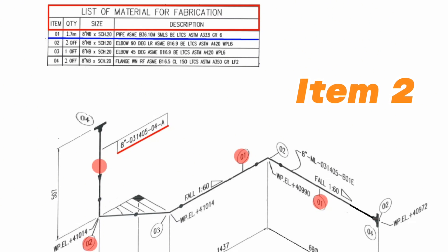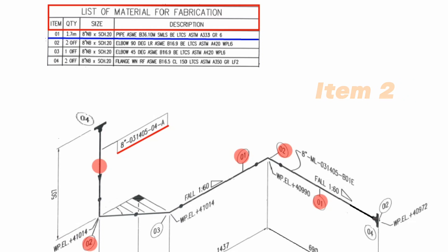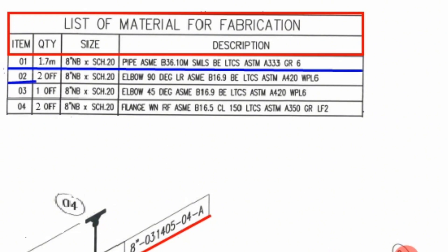Item number 2 is shown in two places of this pipeline drawing. Item number 2: quantities 2-off, size 8-inch, schedule 20, elbow 90-degree, long-radius, ASME B16.9, low-temperature carbon steel materials, ASTM A420.